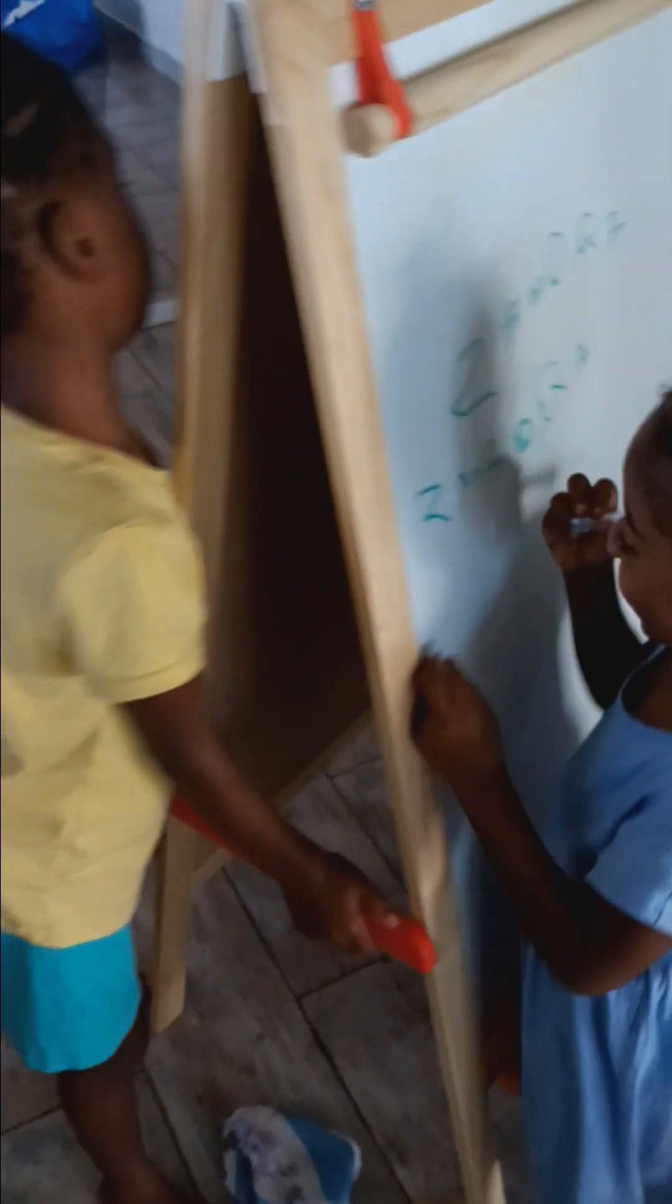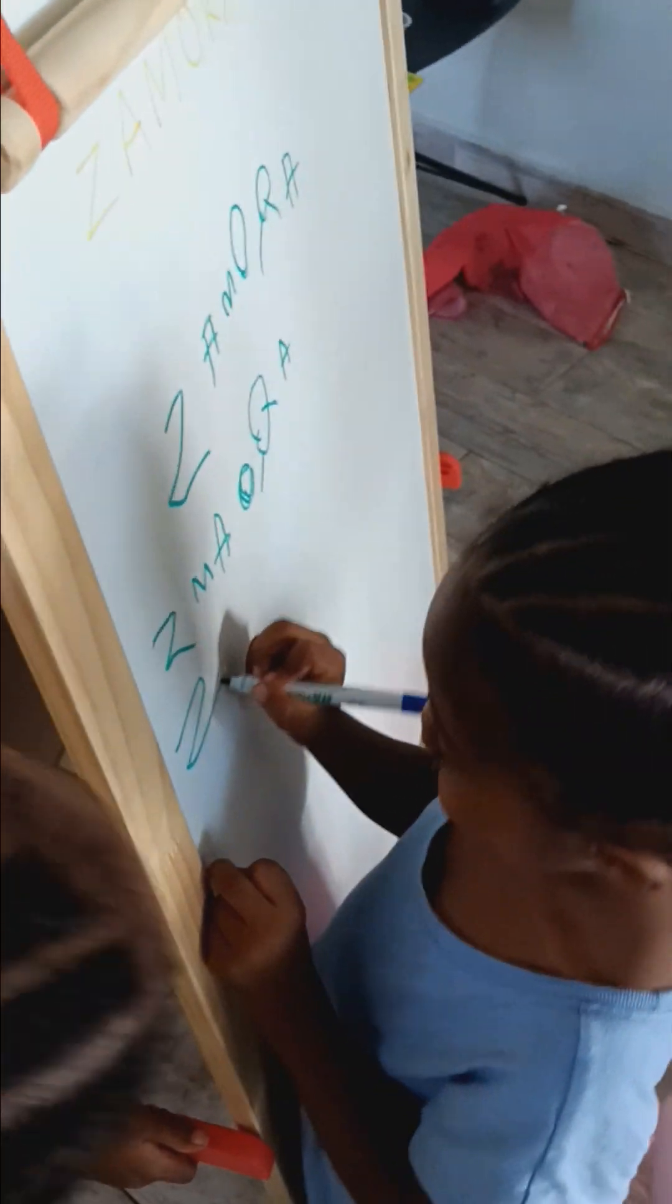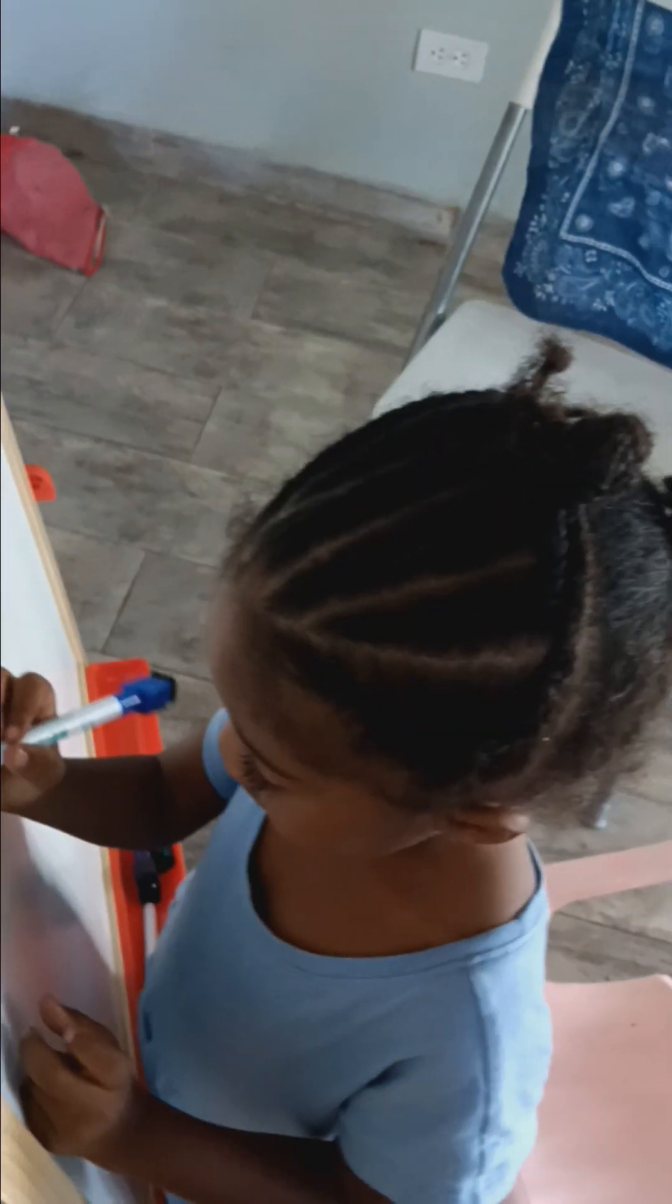Come on. Oh, look. This is a little backwards, but it's all good. You put Z-M-A-O-R-A. But let's go again. Let's write it again. Write your name again, baby. Come on, Zan. Let's finish. Get that so we can get your next letter.